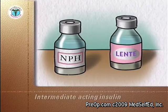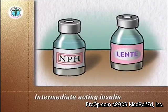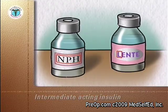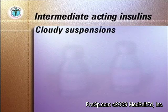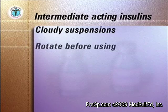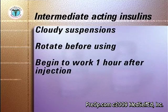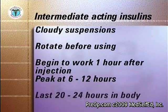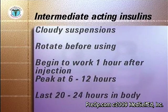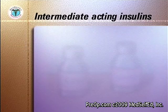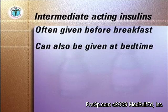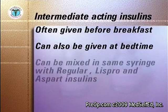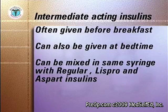Examples of intermediate acting insulins are NPH and Lente insulins. Intermediate acting insulins are cloudy suspensions of crystalline insulin. They need to be gently rotated between the hands before being used. They begin to work 1 hour after injection, peak at 6 to 12 hours after injection, and last 20 to 24 hours in the body. The intermediate insulins are often given before breakfast, and may also be given at bedtime depending on your blood glucose reading. They can be mixed in the same syringe with regular, Lispro, and Aspart insulins.